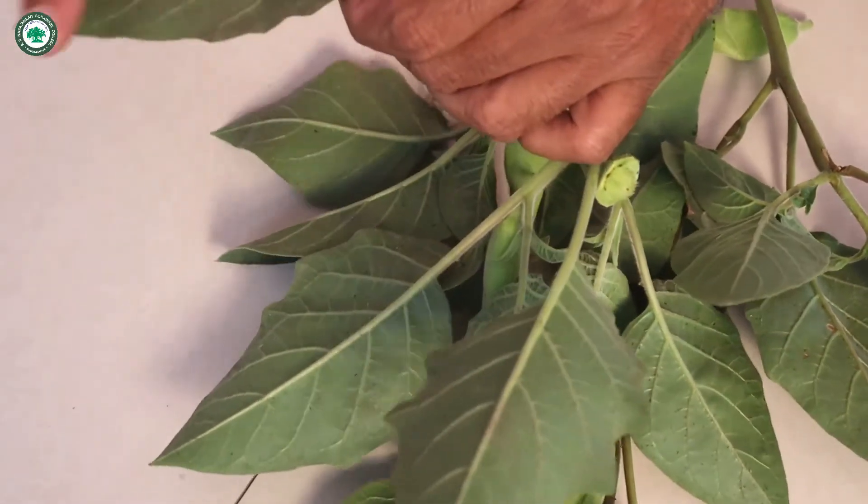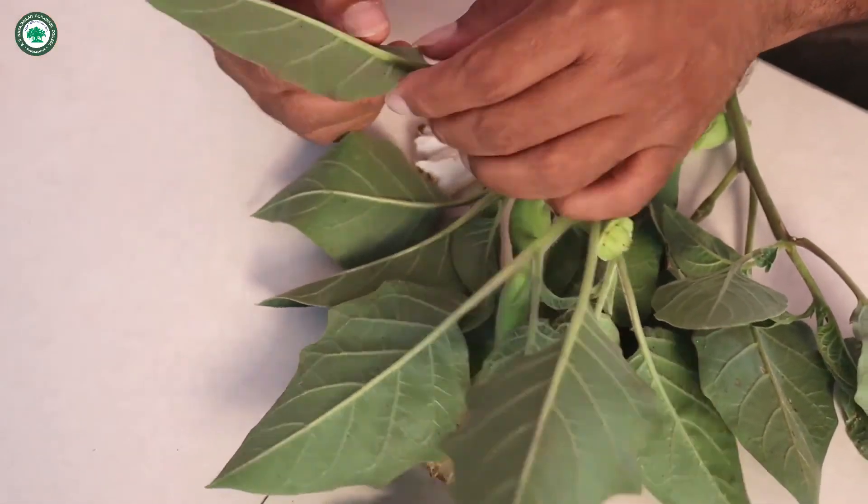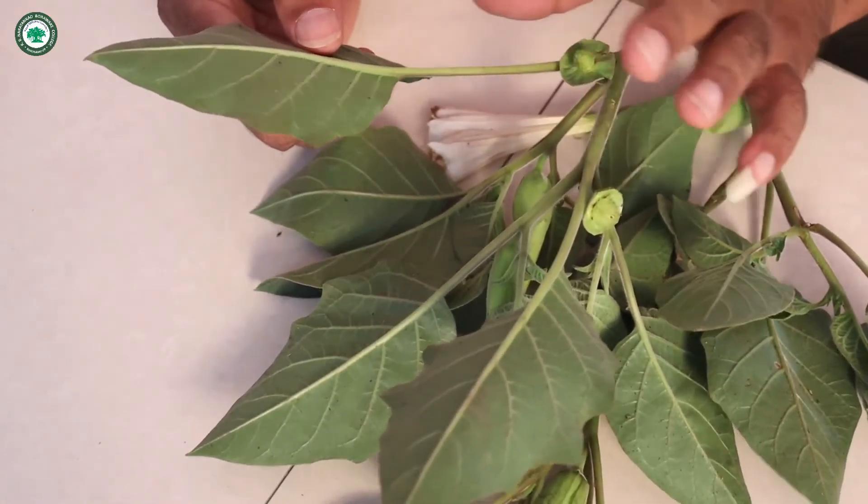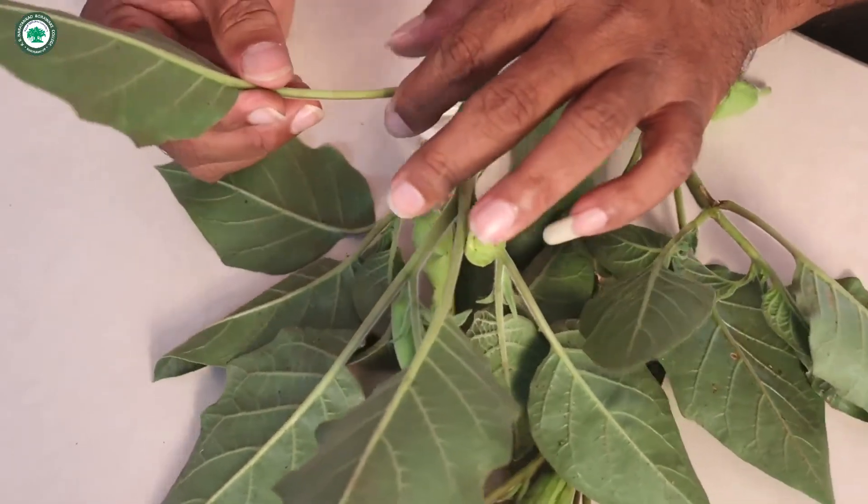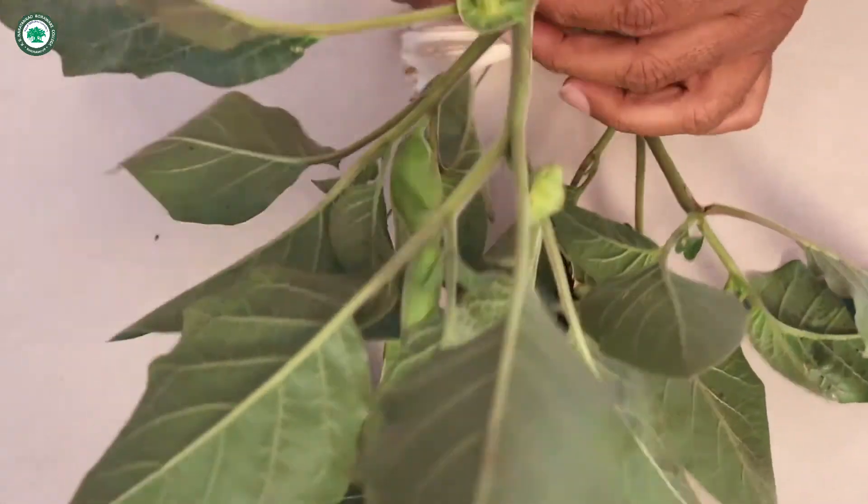And ovate, the shape is ovate, margin is entire, it is acute, then pubescent because on the leaf surface there are again small prickles or hairs are there. And unicostate reticulate is the venation. Now this is about the leaf.